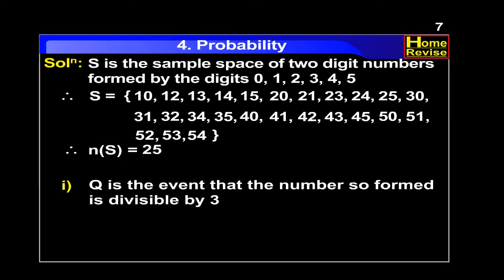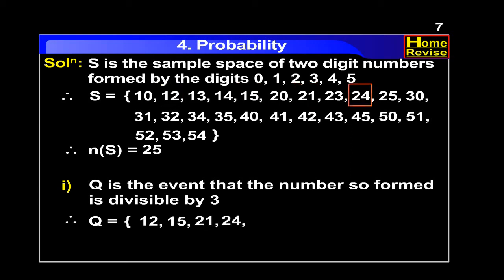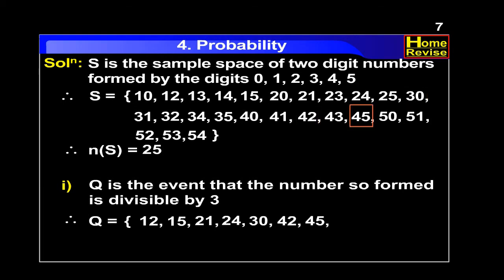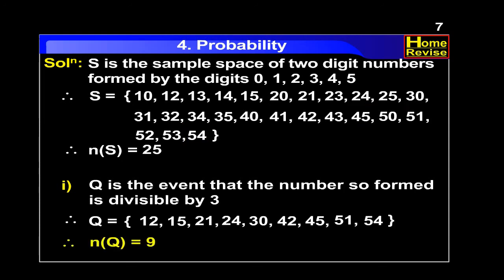Therefore Q is equal to, in curly brackets: 12, 15, 21, 24, 30, 42, 45, 51, 54. Therefore n of Q is equal to 9.